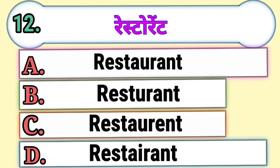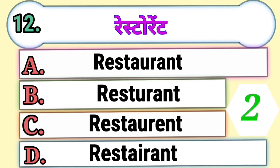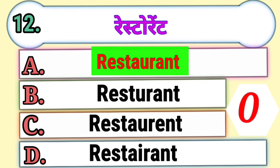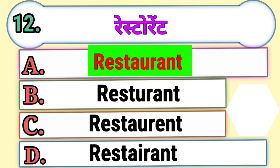Question 12. Restaurant. Choose the correct spelling of restaurant from the following. Option A, Option B, Option C, or Option D. The correct answer is Option A, Restaurant.